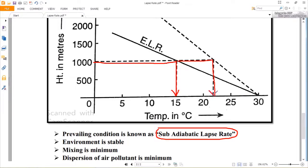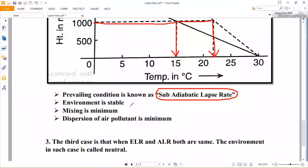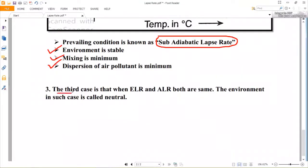And the third case, that is the last one, is when ELR is equal to the ALR—that is, both lines coincide—and in this situation, the environment is known as in neutral condition. Thank you.